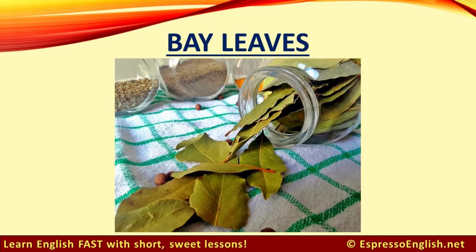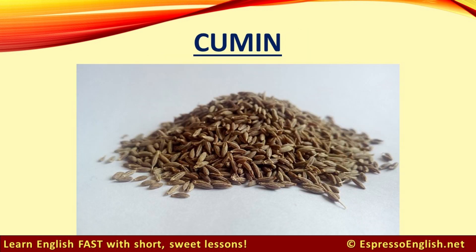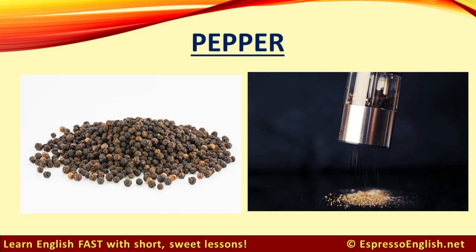Bay leaves. Bay leaves are usually dried and used to provide flavor in soups. Cumin. Cumin can be used in the form of the seeds or ground into a powder.